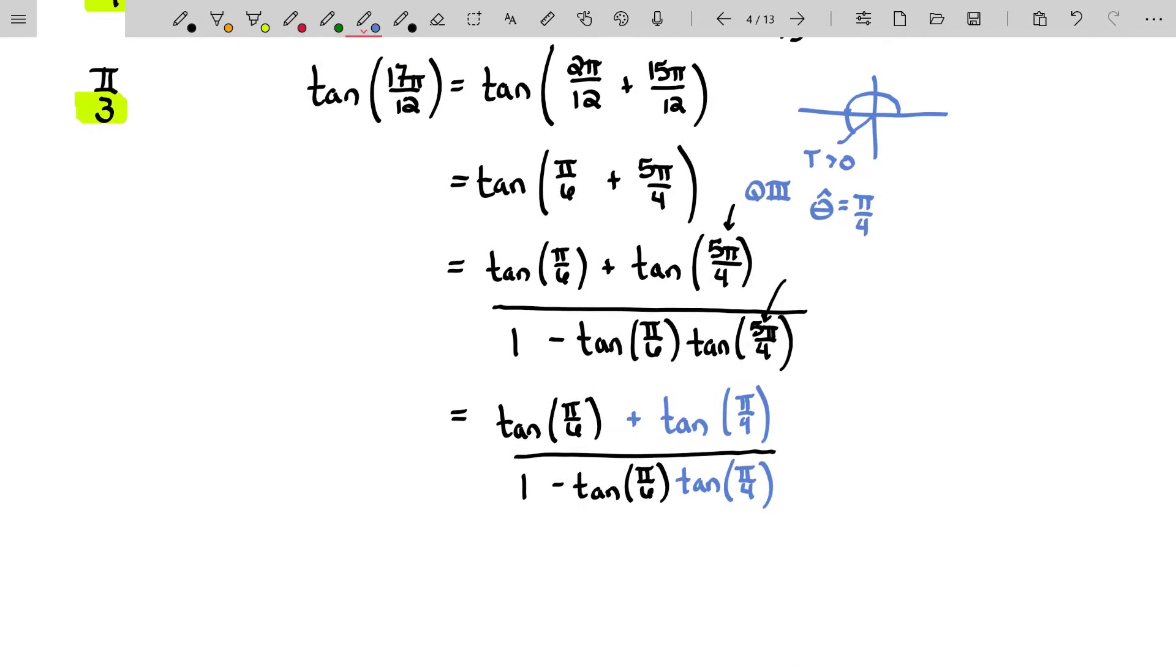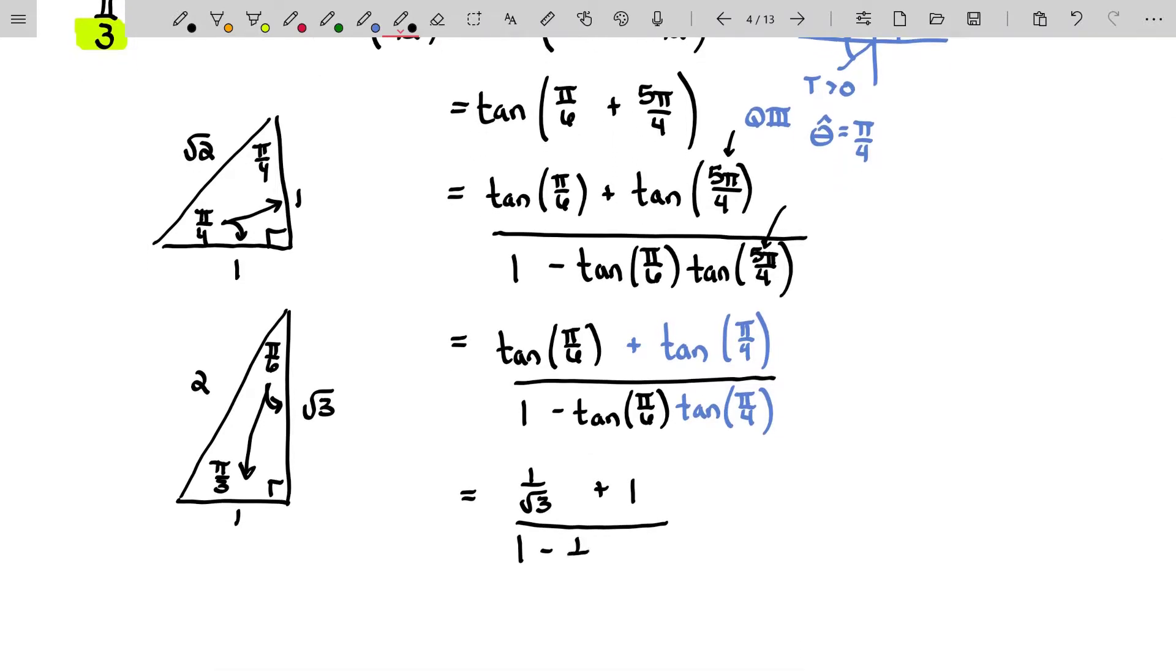There we go. Now I can actually work with my triangles, and I can do my right triangle trigonometry. So I draw out my pi over 4, pi over 4, right angle. That's 1, 1, root 2. And I'll draw my pi over 6, pi over 3, right triangle. And those ratios are 1, 2, and a root 3. So the tangent of pi over 6, tangent's opposite over adjacent, that's 1 over root 3. Plus tangent of pi over 4, that's opposite over adjacent, so that's 1 over 1. 1 divided by 1 minus, well, the tangent of pi over 6, we've already said is 1 over root 3, times tangent of pi over 4 is 1.